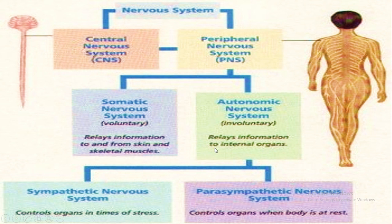The Autonomic Nervous System is in our body — it is involuntary and sends information to the internal organs. In addition, there are two types: Sympathetic and Parasympathetic.